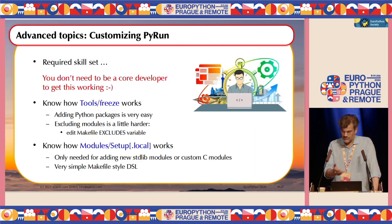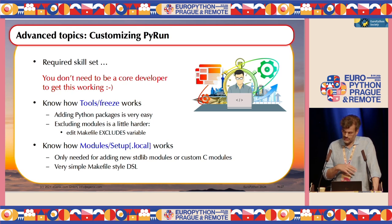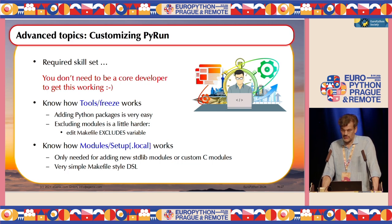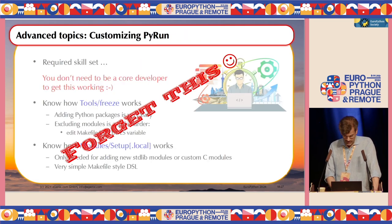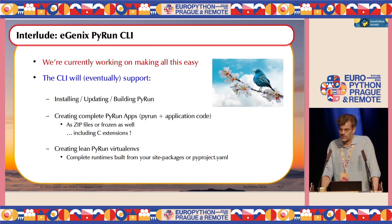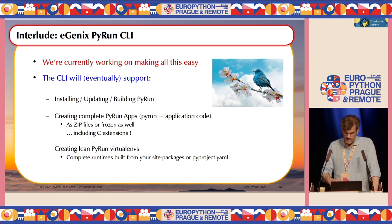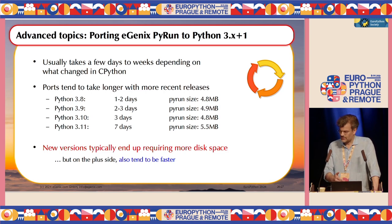If you want to customize PyRun — for example, include extra libraries or C extensions not in the standard set — that's also easy to do. You don't need to be a core dev, but you do need some knowledge of how Python is compiled, how the freeze tool works, how it finds modules, and how to configure modules in CPython. Because all of this is still too complex, we're creating a command line tool that takes care of everything: installing PyRun, updating it, building it, creating PyRun apps, and creating PyRun virtual environments. This is work in progress and hasn't been released yet.